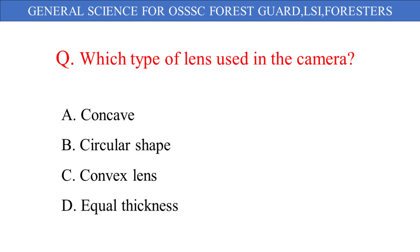Which type of lens is used in the camera? The given options are: A. Concave, B. Circular shape, C. Convex lens, D. Equal thickness. And the correct answer is option C: Convex lens.